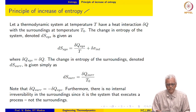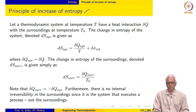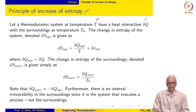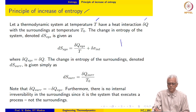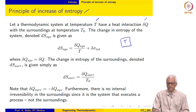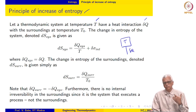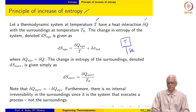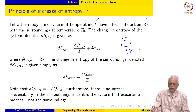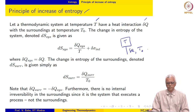Let us say that we have a thermodynamic system at temperature T, and let it have a heat interaction delta Q with the surroundings at temperature T naught. At an instant, the system is at a temperature T and it has a heat interaction with the surroundings of delta Q. It could either receive heat from the surroundings or reject heat to the surroundings, but it has a heat interaction with surroundings at temperature T naught.